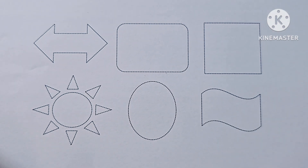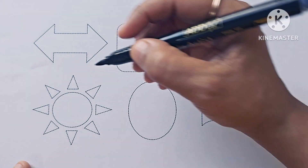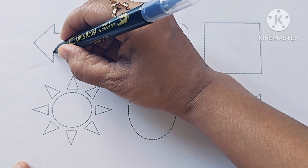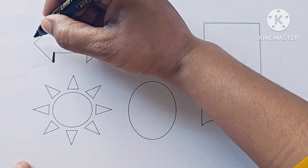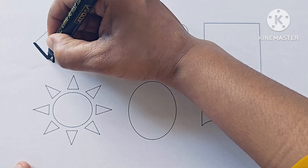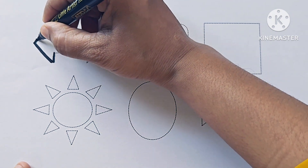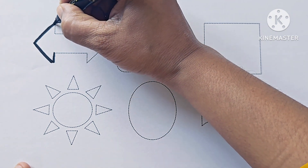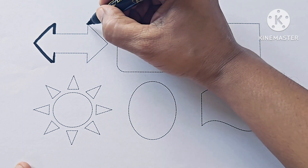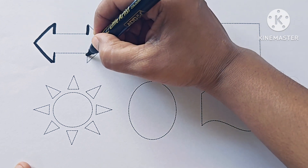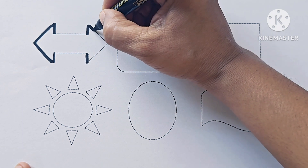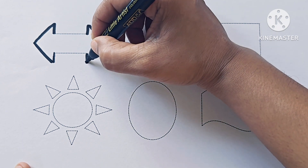Let us draw shapes and symbols. This is left-right arrow symbol. Its direction is left and right, so this symbol is a left-right arrow.